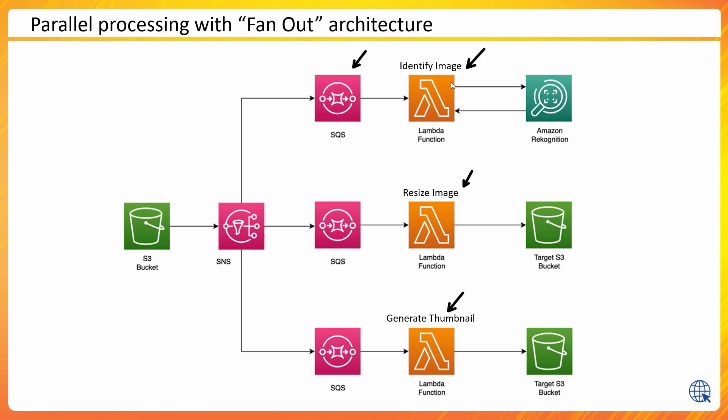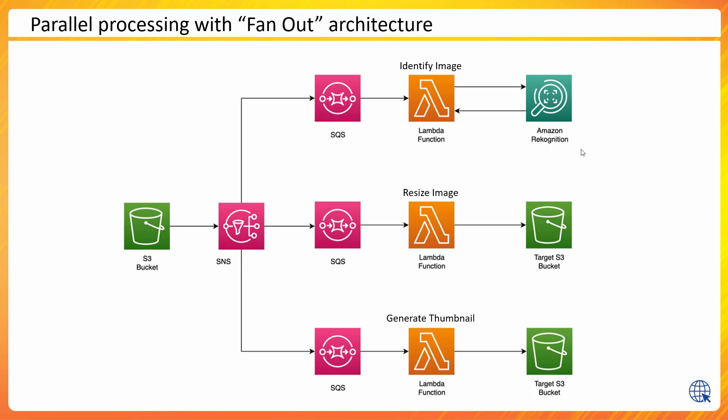One Lambda function uses Amazon Rekognition — a machine learning, AI-based image detection service — to detect what type of image it is: a building, dog, cat, vehicle, water body, jungle, or house. The service returns what type of image it is. Additionally, another Lambda function handles resizing the image to fit the application, and stores the resized output into a target S3 bucket.